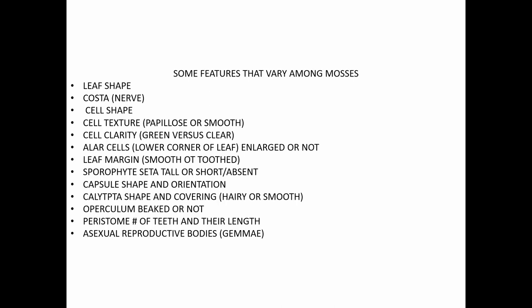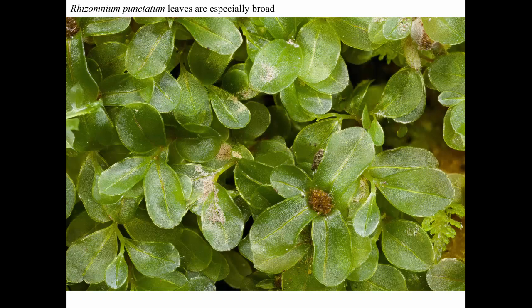Sporophytes can have tall stalks or seta, or sometimes very short ones with no evident seta. Capsules can have various shapes and can be upright or nodding. The cap of the capsule — the operculum — can be hairy, smooth, or different shapes; the lid can be beaked or not. The peristome, the region around the mouth, typically consists of teeth — eight, sixteen, or thirty-two teeth, or maybe none. Some mosses also reproduce asexually by production of gemmae.